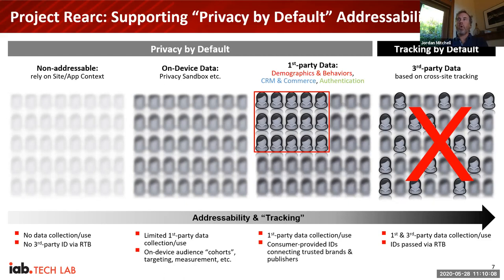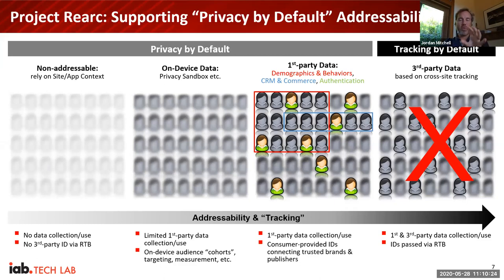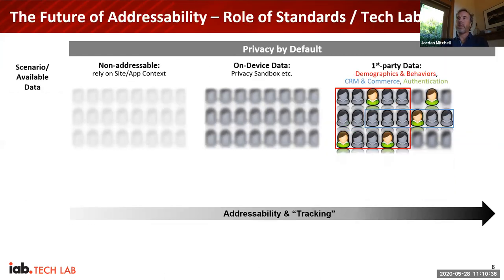First parties still have an opportunity here. They hold first-party data — whether demographic, behavioral, CRM, or e-commerce data — they have customers and customer data they can draw from. Authenticated data is also key: some are going for login, some for email-based logins. This is a way for first parties to identify audiences. The question becomes how we utilize that when the bridge to third parties is being disrupted. This is where standards come in.